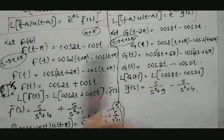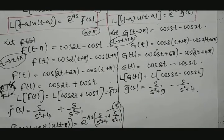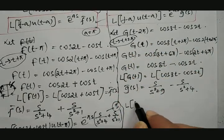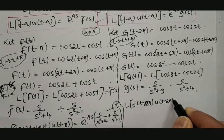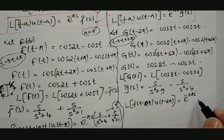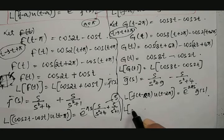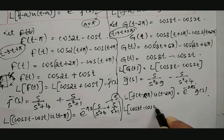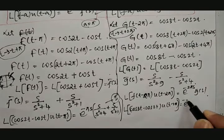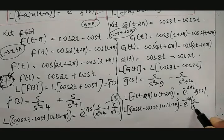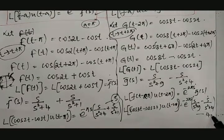As per the property, with a = 2π: L{(cos 3t − cos 2t)·u(t − 2π)} = e^(−2πs)·Ḡ(s) = e^(−2πs)·[s/(s² + 9) − s/(s² + 4)]. This is equation 4.